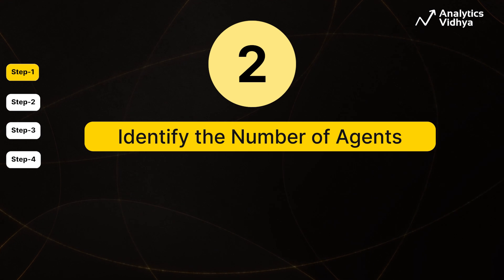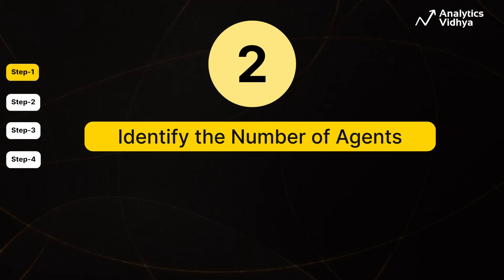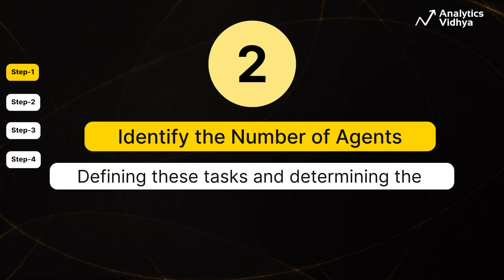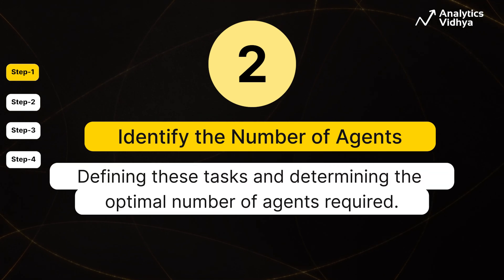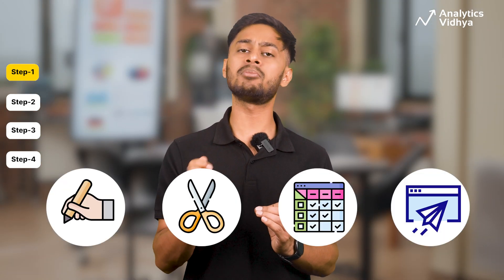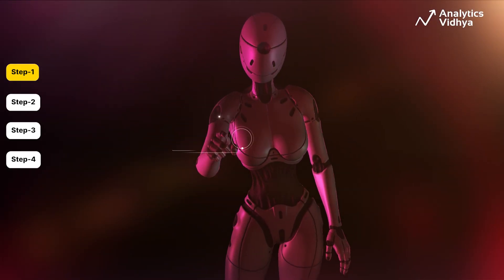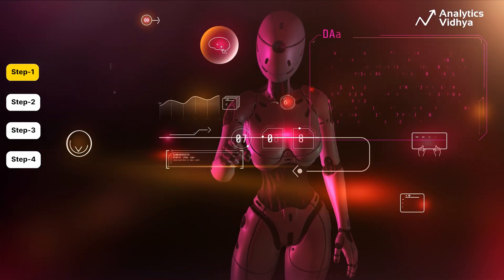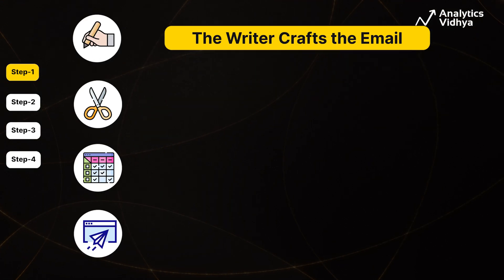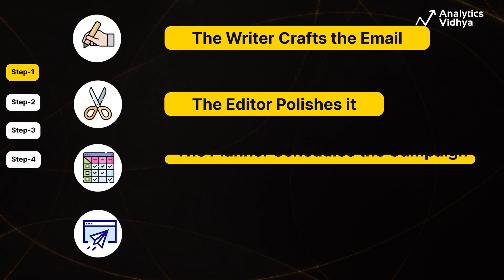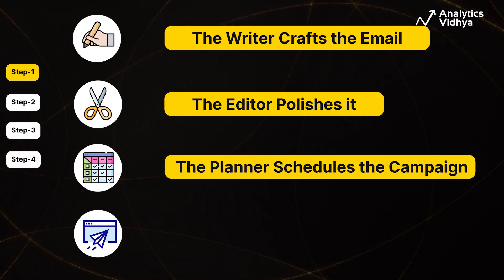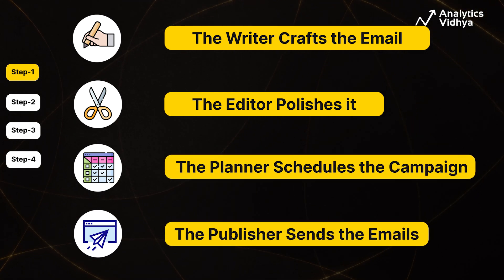But how many AI agents do we need? The answer lies in defining these tasks and determining the optimal number of agents required. For our system, we will use four specialized agents — Writer, Editor, Planner, and Publisher — each assigned a specific task to ensure efficiency. The writer crafts the email, the editor polishes it, the planner schedules the campaign, and the publisher sends the email.